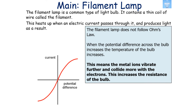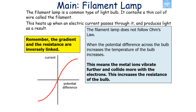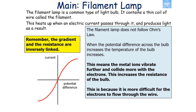The filament lamp does not follow Ohm's law because when the potential difference across the bulb increases, the temperature of the bulb increases. This means the metal ions vibrate further in the filament and collide more with the electrons moving through it, increasing the resistance of the bulb. The gradient and resistance are inversely linked: the steeper the line, the lower the resistance; the flatter the line, the higher the resistance. This increasing resistance makes it more difficult for electrons to flow, which is why the line becomes flatter.